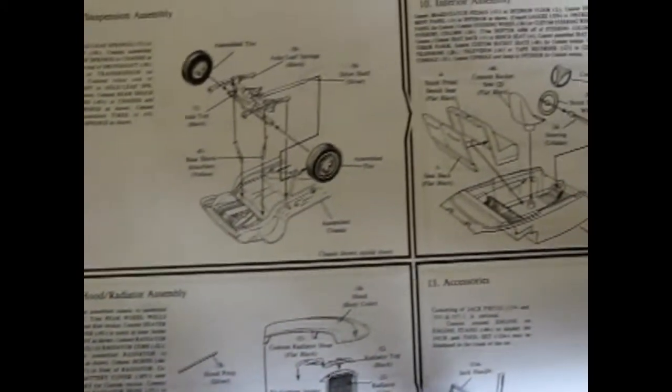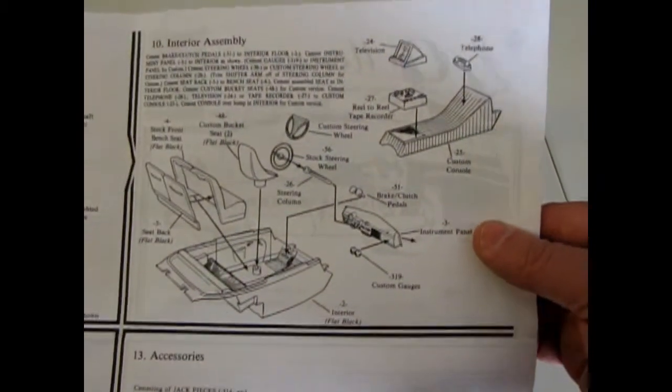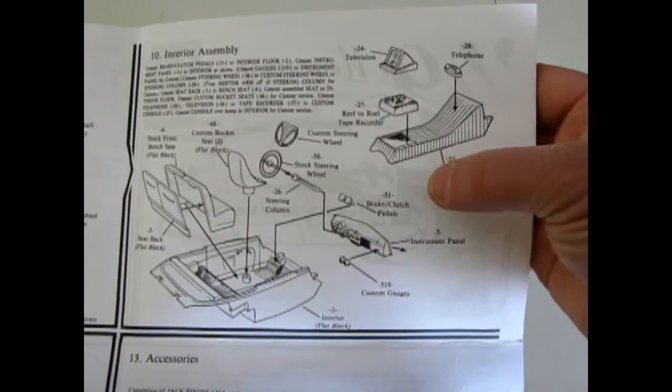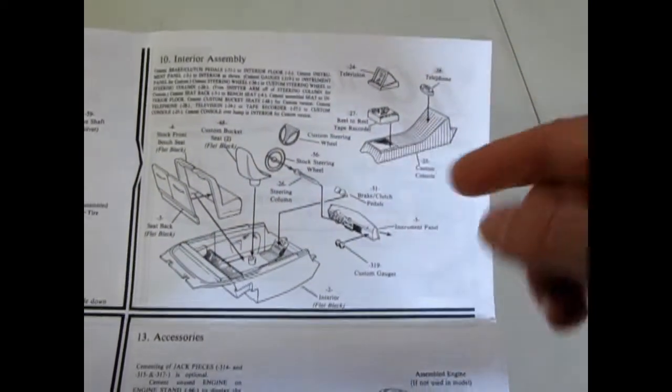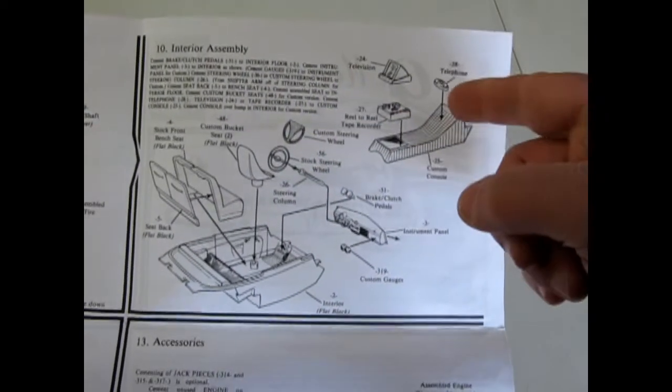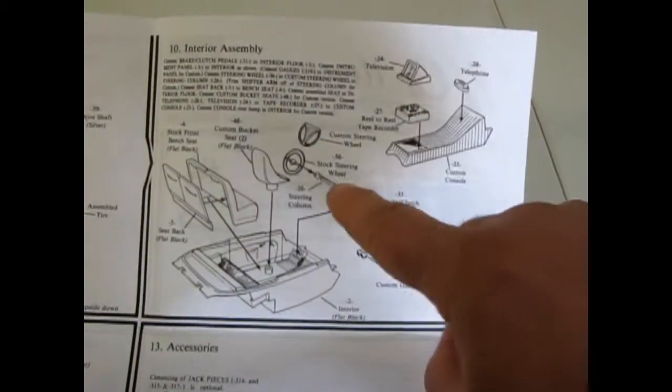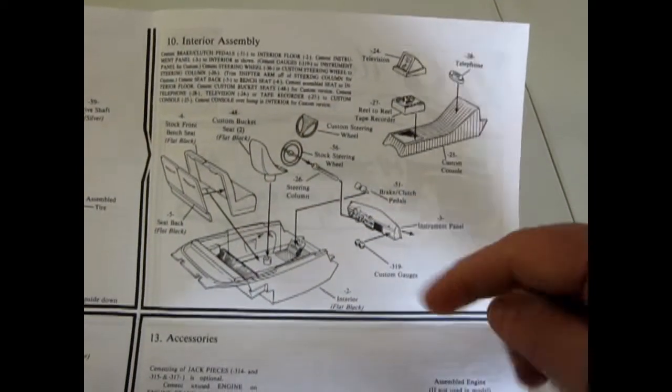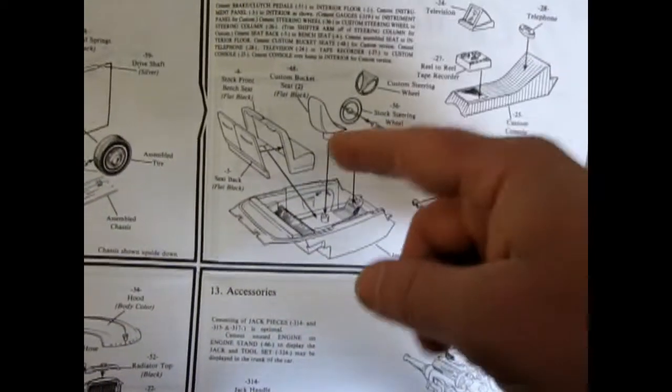The rear suspension and our interior which includes a lot of custom bits. You can build it stock or add in the console with a reel-to-reel tape recorder, a telephone and a television, and the custom steering wheel and bucket seats.